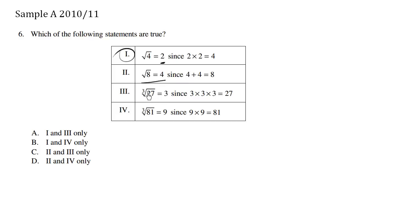Choice number 3. This index is 3. The cube root of 27 equals 3, since 3 times 3 times 3 equals 27. This, again, is true.